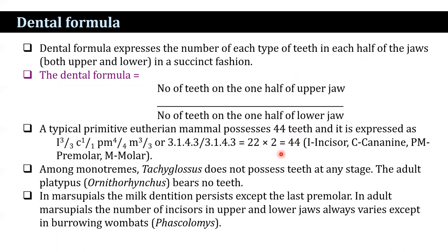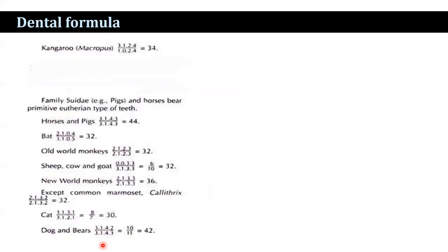The total number of teeth in a primitive eutherian is 44. Among monotremes, Tachyglossus does not possess teeth at any stage, and the adult platypus also has no teeth. In marsupials, the milk dentition persists except the last premolar. The dental formula for kangaroo is 34 teeth: incisor 3, canine 1, premolar 2, molar 4. In horses and pigs, the formula is 3143/3143, giving a total of 44. In bats, the total is 32. In old world monkeys, the formula is 2-1-2-3, giving 32 teeth, whereas new world monkeys have 2-1-3-3, giving 36 teeth. In cats, the number is 30; in dogs and bears, the number is 32.